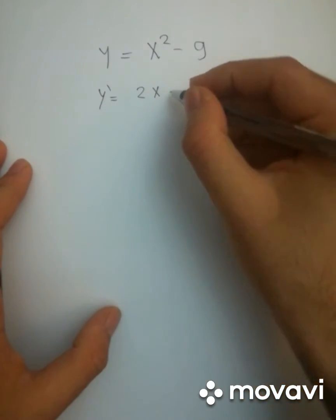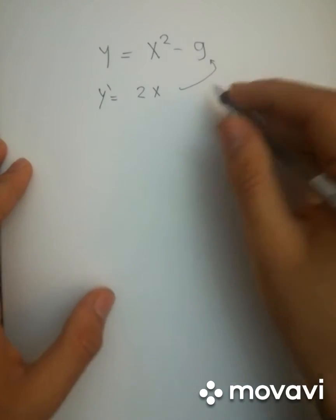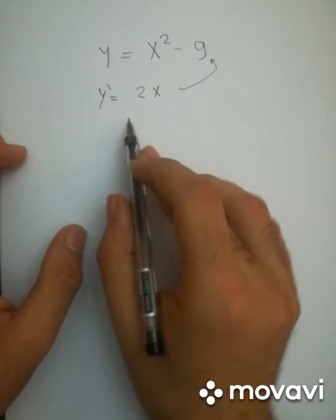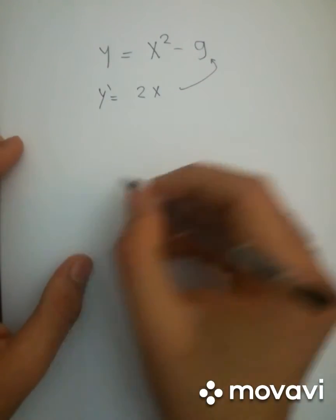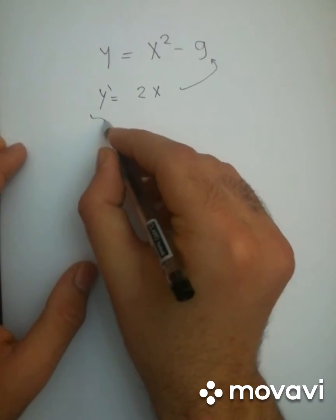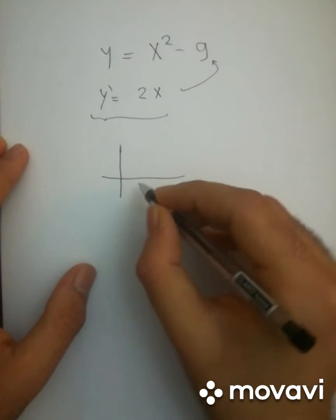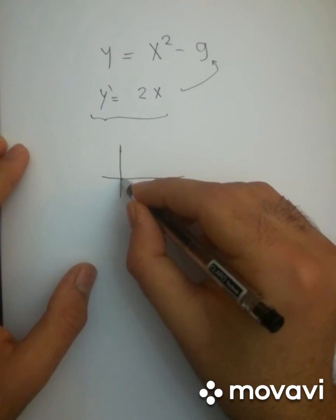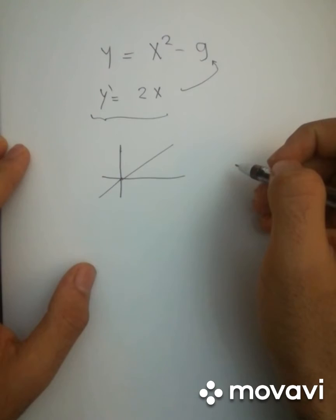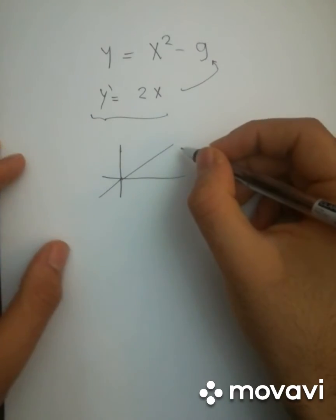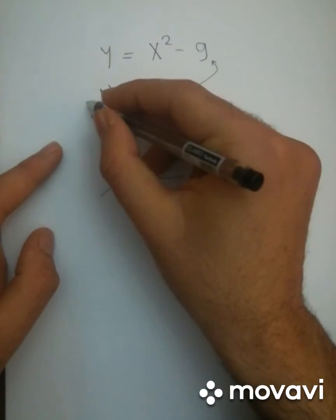And so we need to know when this function is increasing, and so we have to plot this derivative. And so if you plot it, I'm not going to be very accurate here, but I'll guess it's going to be a straight line, and its slope is going to equal 2.